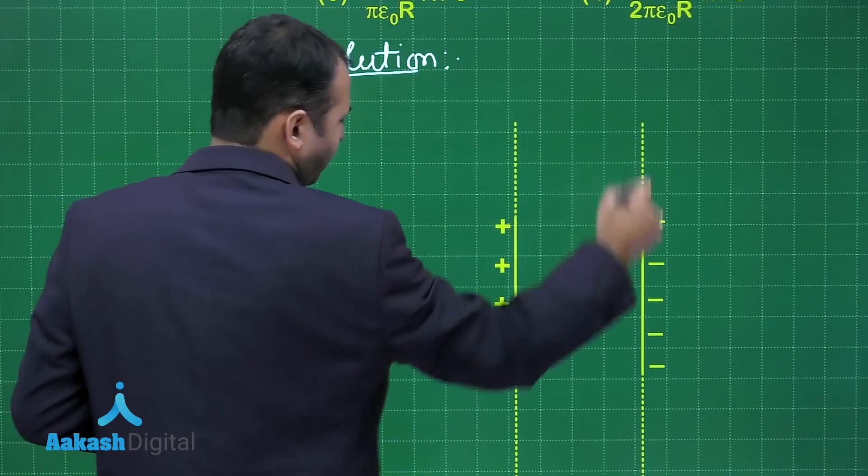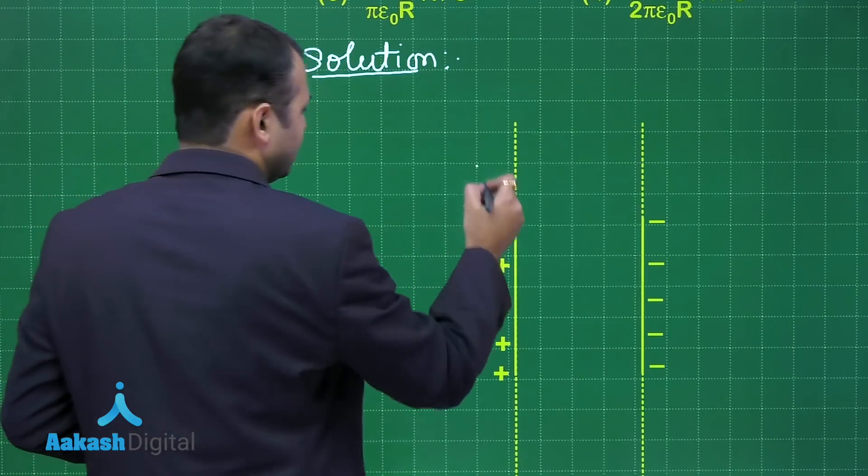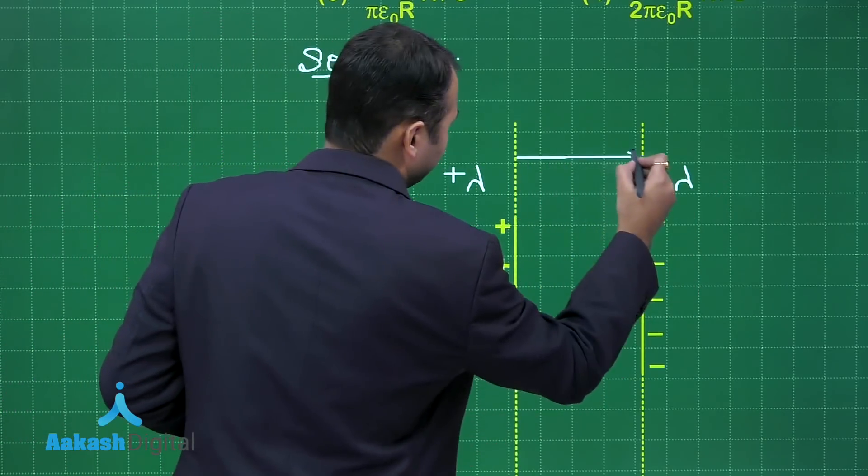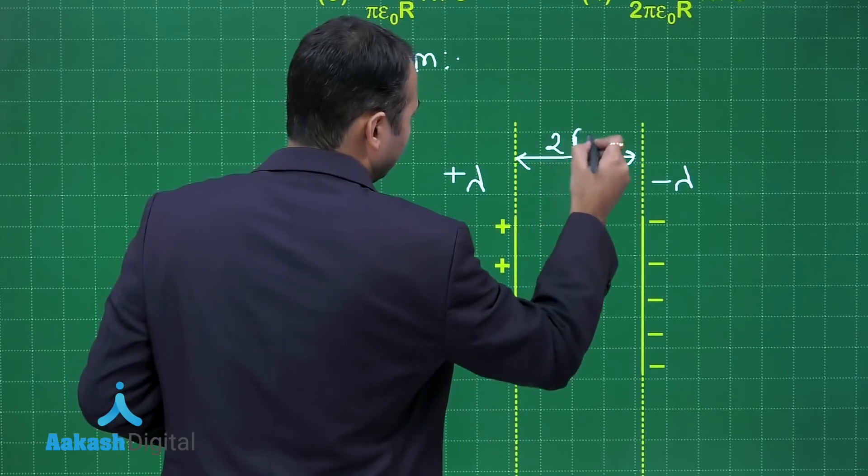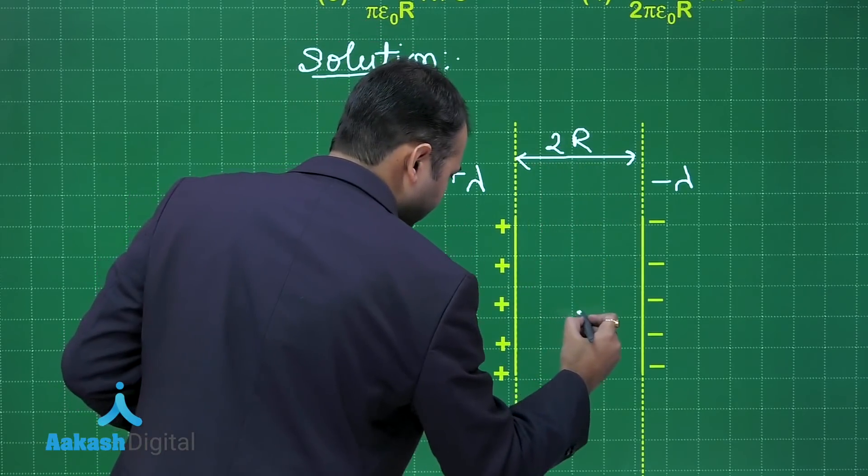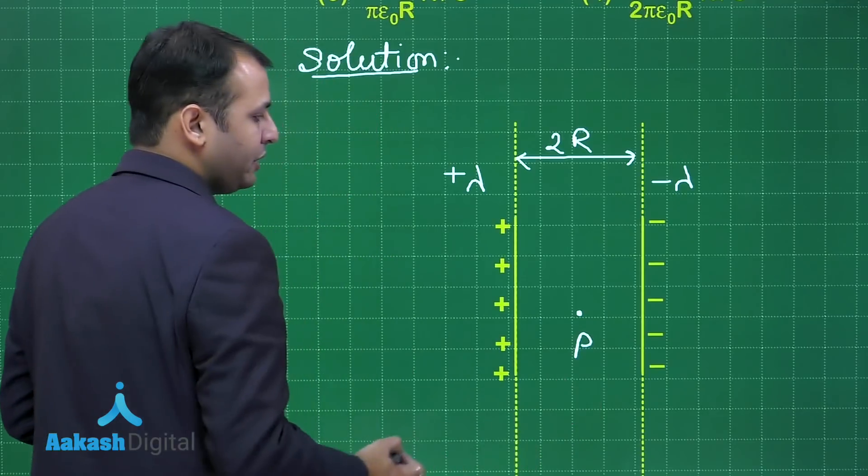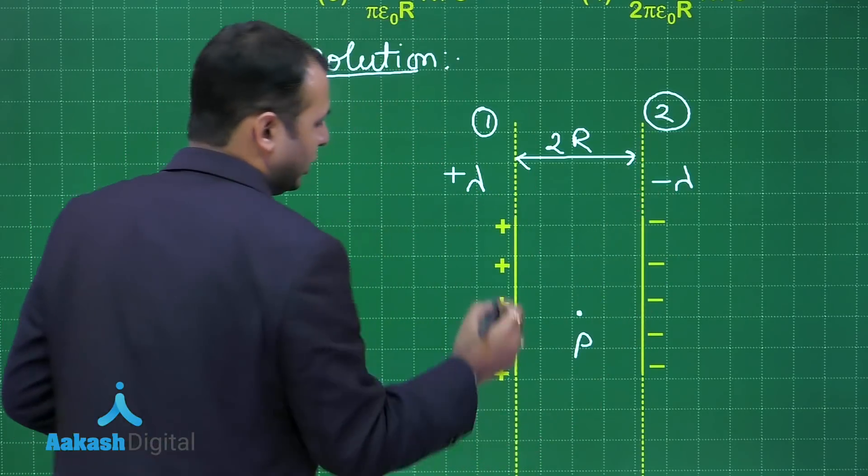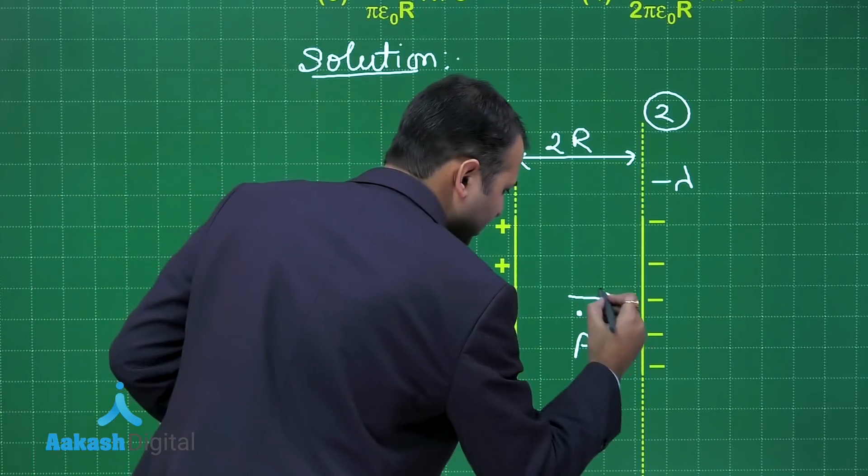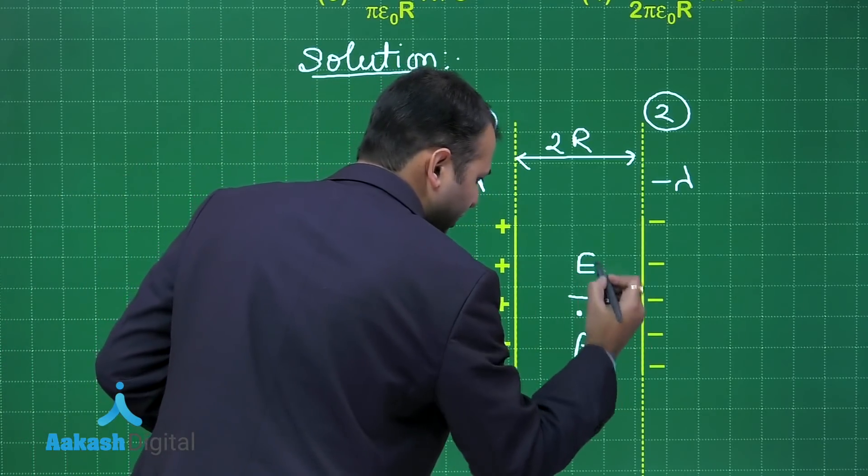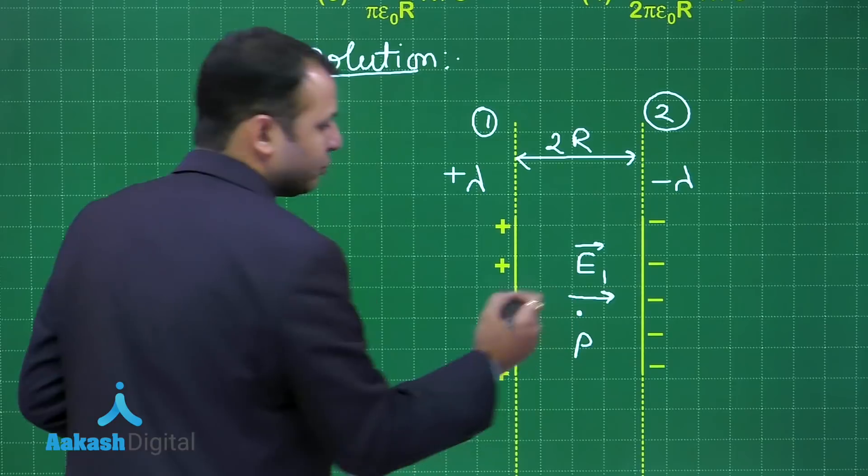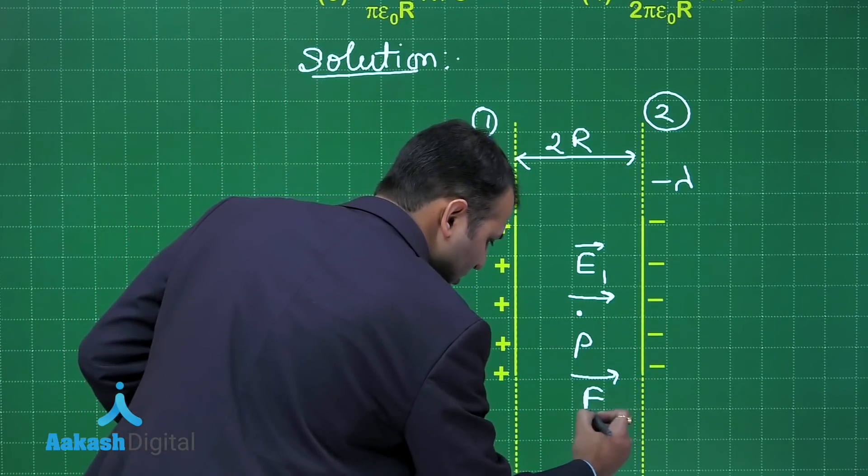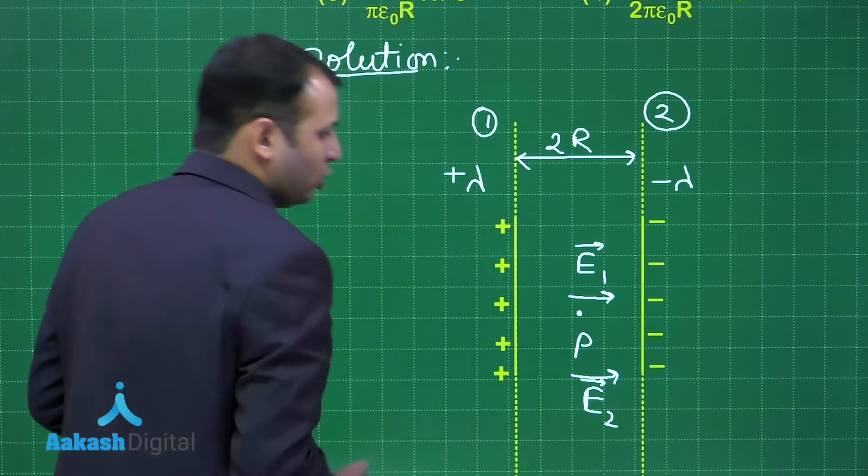This is the two infinitely large linear charge arrangements. This is +λ, this is -λ. The distance between them is said to be 2R. We want to find at midway point what would be the electric field. Let's take this as point P. So let's take this as first system and this is the second system. Electric field due to first will be in this direction as we assume the test charge is kept at point P, and the electric field due to second system will also be in this direction.